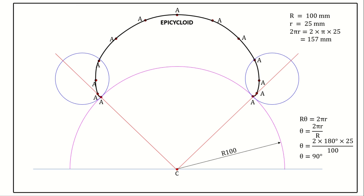So, θ = 2 × 180° × 25 / 100, therefore θ = 90 degrees. This means that if the angle ACA is equal to 90 degrees, then the arc length AA is equal to 157 millimeters. Using this angle, we can easily confirm that the arc length AA equals 157 millimeters.